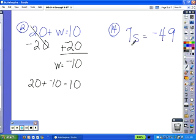Number 14, 7s means 7 times s. So we would have to do the opposite of multiplication and divide. So we'll divide both sides by 7. On the left side, the 7s cancel out. So we have s equals negative 49 divided by 7, which would be negative 7.